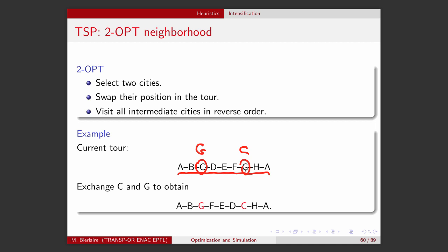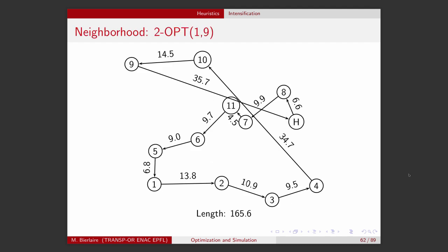We go A, B, G, then F, E, D in reverse order, then C, H, back to A. So we obtain a new tour: A, B, G, F, E, D, C, H, A. Let's take the solution obtained previously using the greedy heuristic — if you remember, the length of this tour is 165.6.